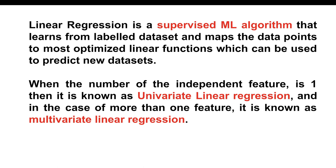In supervised machine learning, the model is trained from a labeled dataset. We have both input and the desired output, and we pass both to the algorithm. The model learns what it has to derive from the input, because the output has already been provided. So even if you provide new data points as input, it will be able to give you the desired output — that is what supervised machine learning is all about.